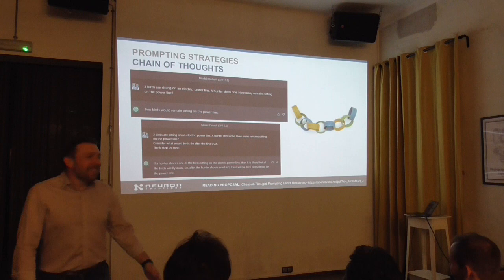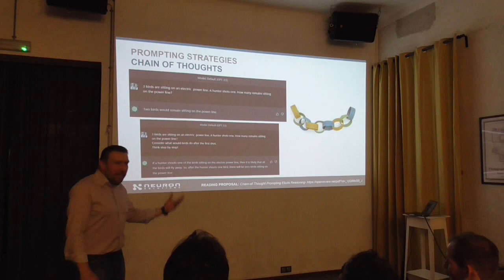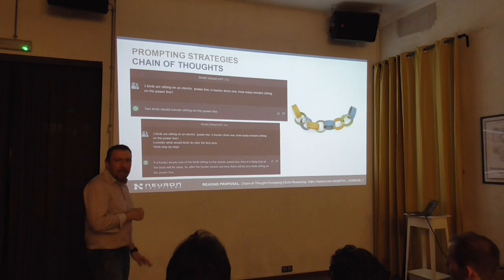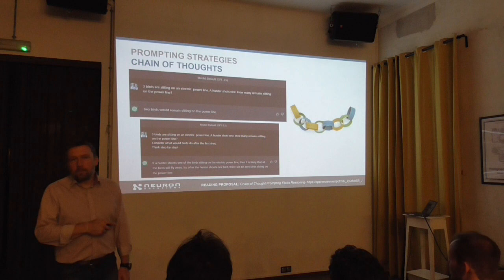If a hunter shoots one of the birds sitting on the electric line, it is likely that all birds will fly away. So after the hunter shoots one bird, there will be zero birds sitting on the power line. That's the chain of thought. Even if you just write 'think step by step' — nothing else — that helps. Definitely helps.